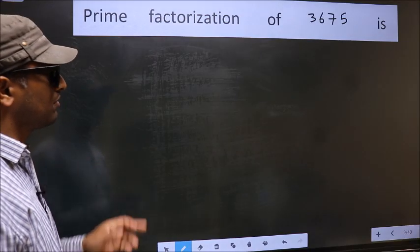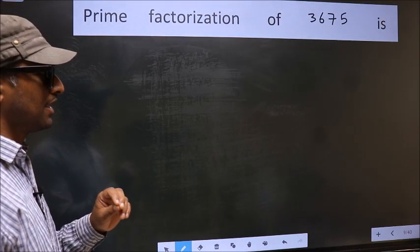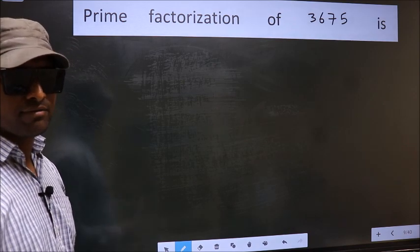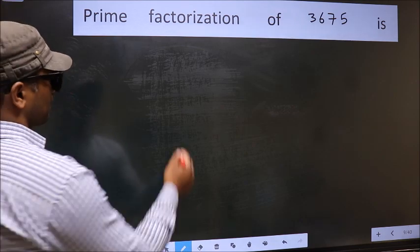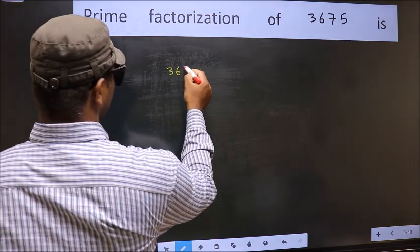Prime factorization of 3675. To do prime factorization, first we should frame it in this way. 3675.